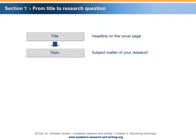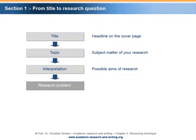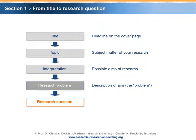As explained in the chapter Interpretation of a Topic, each topic needs an interpretation. An interpretation is needed in order to identify possible aims of a research project. The research problem is a description of the aim of the research project. After one has identified the aims and decided for a specific one, it can be documented in the subchapter Research Problem, which finally leads to a research question.